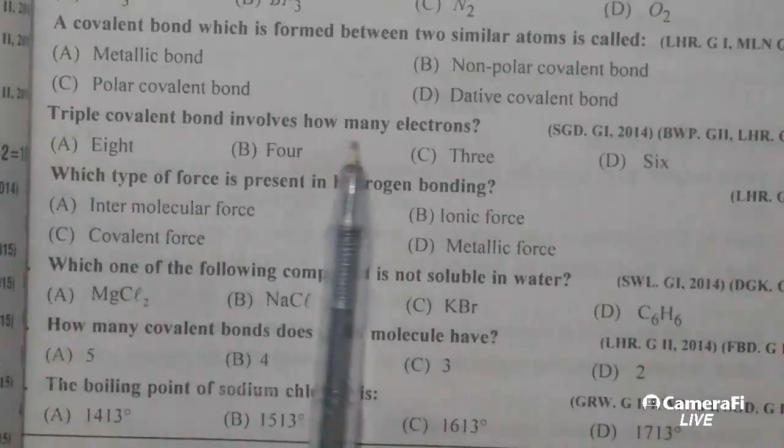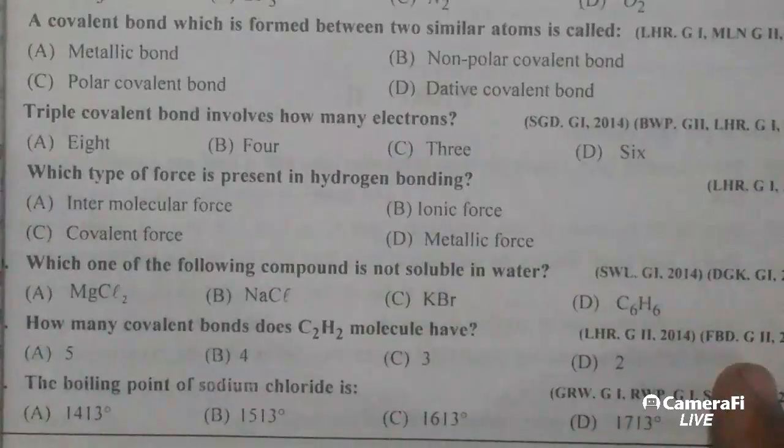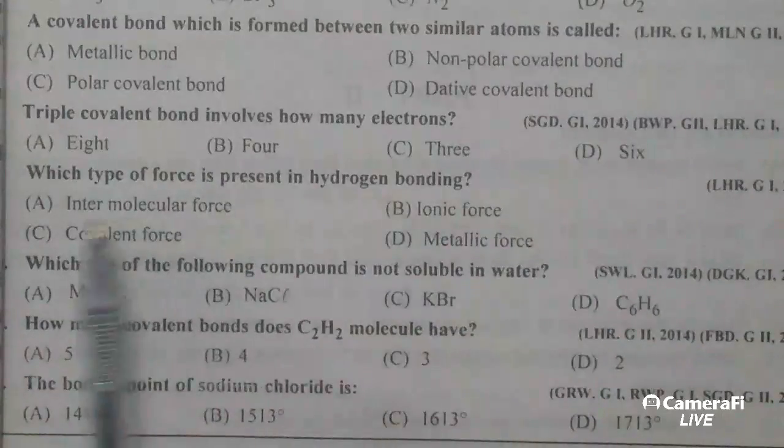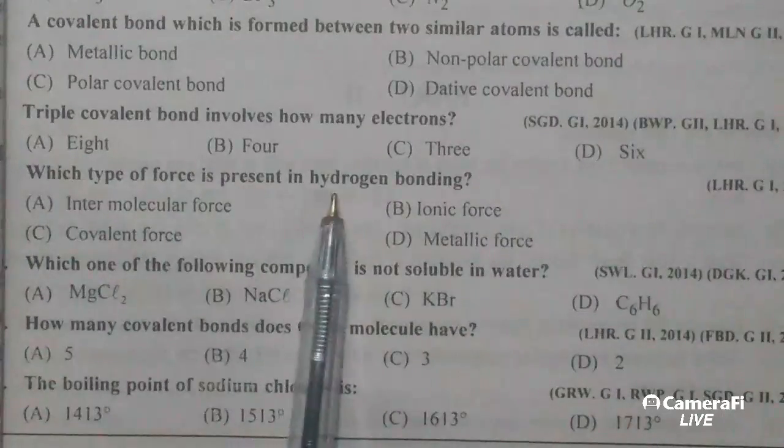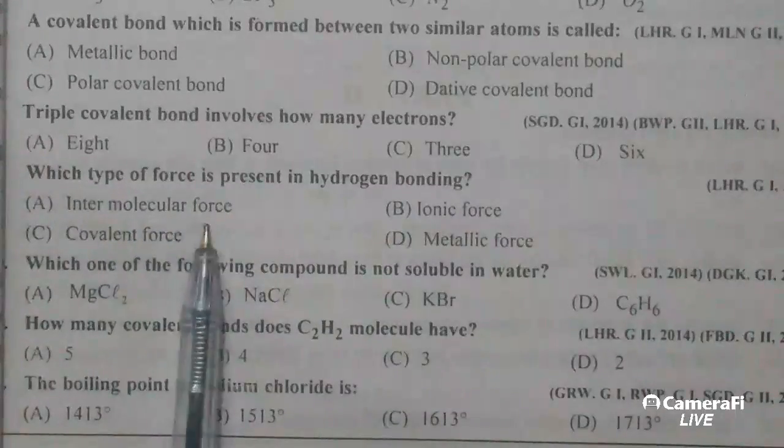Triple covalent bond involves how many electrons? Triple covalent bond involves six electrons. Which type of force is present in hydrogen bonding? Intermolecular force.